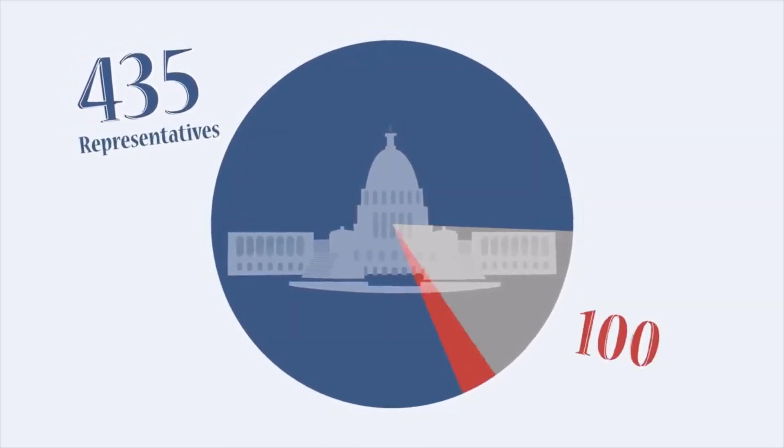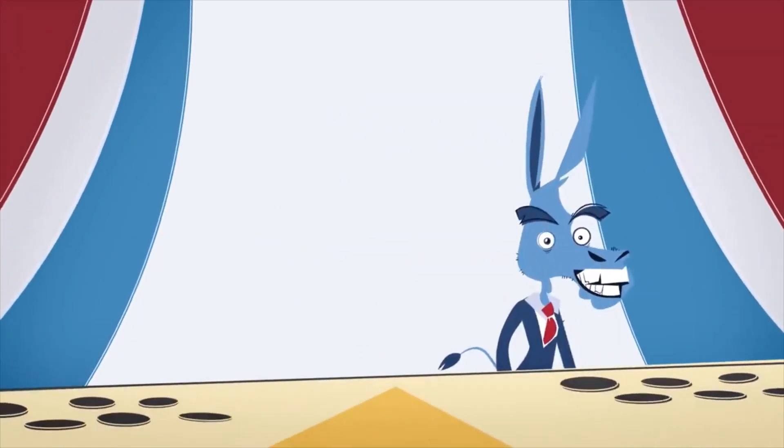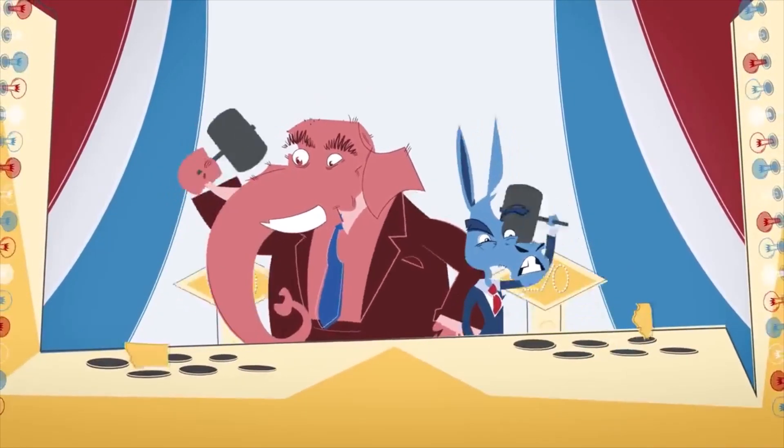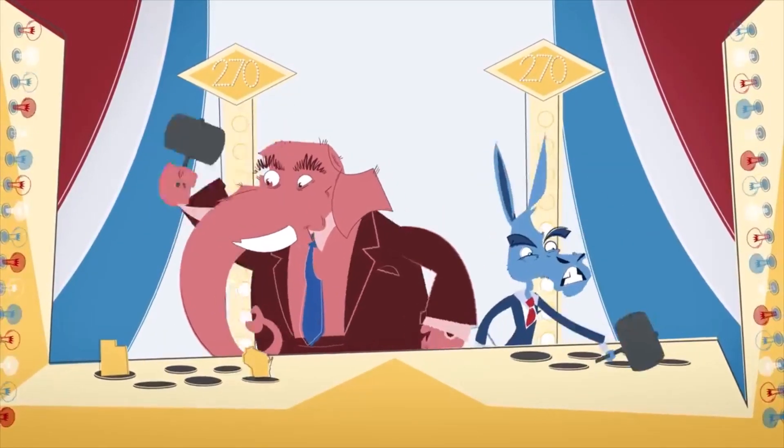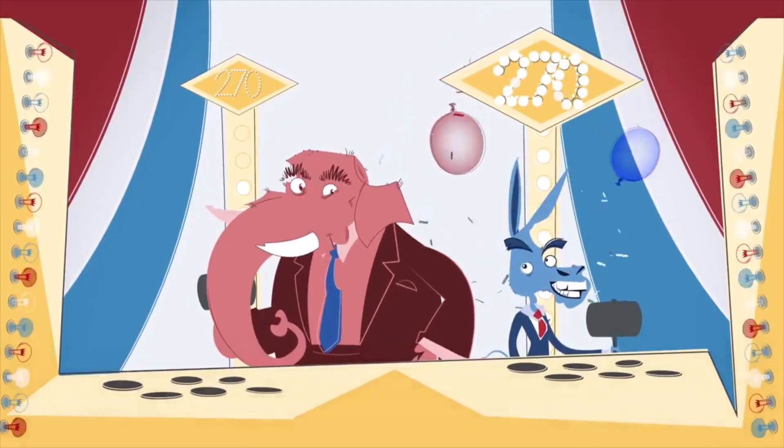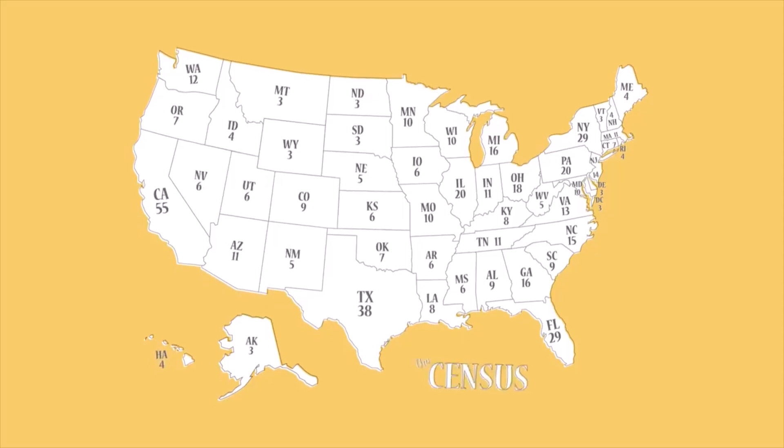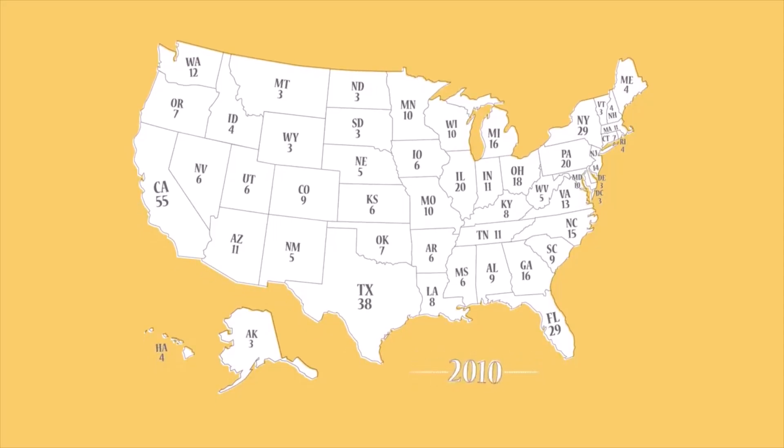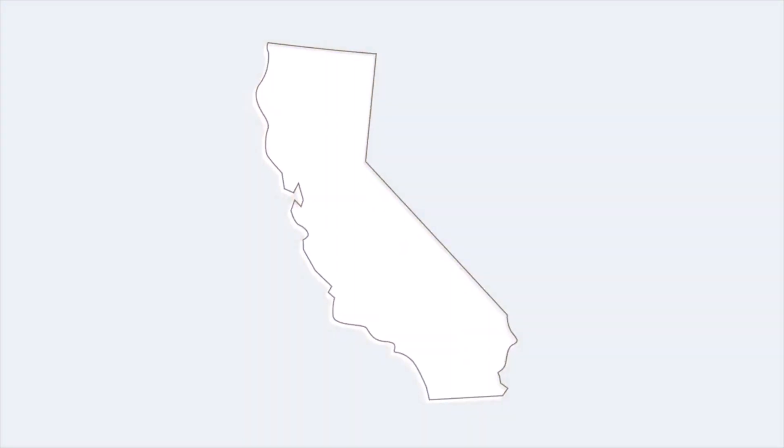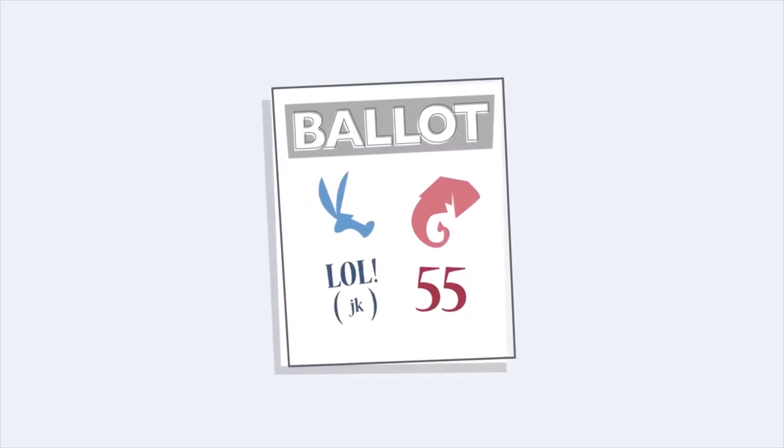435 representatives, plus 100 senators, and three electors from the District of Columbia. Essentially, the Democratic candidate and Republican candidate are each trying to add up the electors in every state so that they surpass 270 electoral votes, or just over half of 538 votes, and win the presidency. So how do states even get electoral votes? Each state receives a particular number of electors based on population size. The census is conducted every 10 years, so every time the census happens, states might gain or lose a few electoral votes. Let's say you're a voter in California, a state with 55 electoral votes. If your candidate wins in California, they get all 55 of the state's electoral votes. If your candidate loses, they get none.